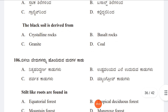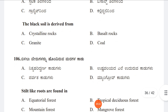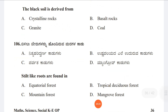Question 106: Stilt-like roots are found in Option A: Equatorial forest, Option B: Tropical deciduous forest, Option C: Mountain forest, Option D: Mangrove forests. The answer is Option D, Mangrove forests.